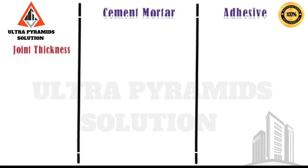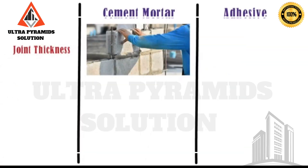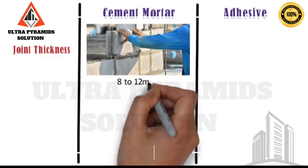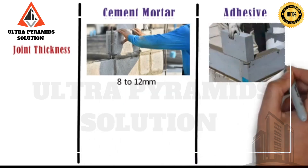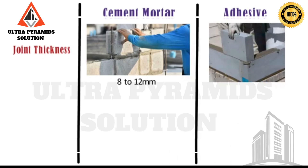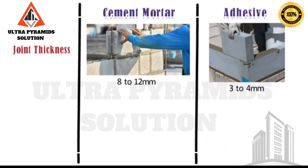Joint thickness: In case of AAC block masonry with cement mortar, the thickness of the cement mortar joint shall be 8–12 mm. Whereas, in case of AAC block masonry with adhesives, only 3–4 mm thickness of joint is sufficient.